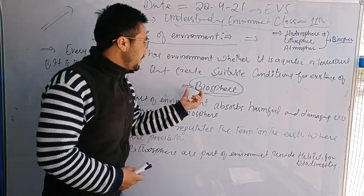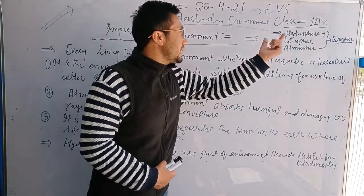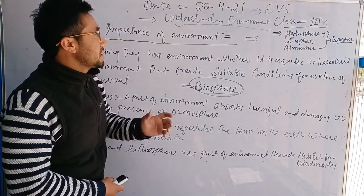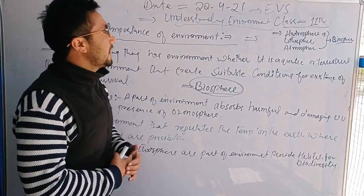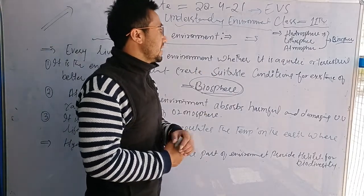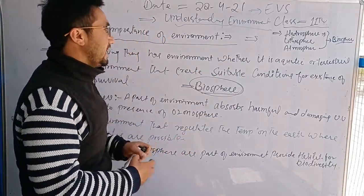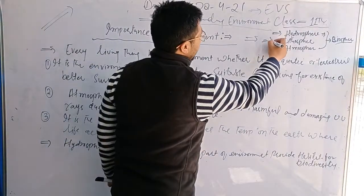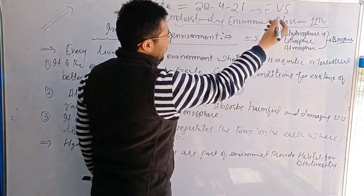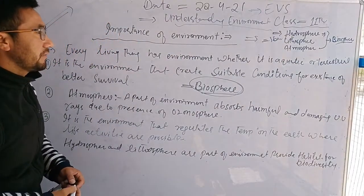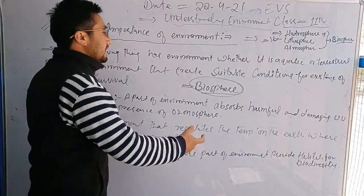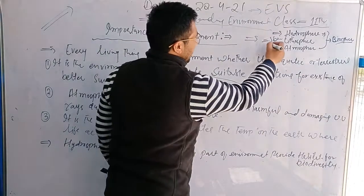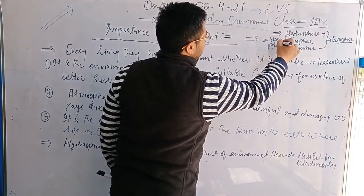The hydrosphere, lithosphere, and atmosphere are components we can categorize as part of the abiotic environment. This is the biotic environment and this is the abiotic environment — these two types are fundamental to our study.